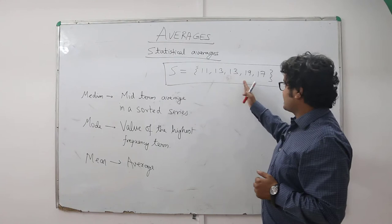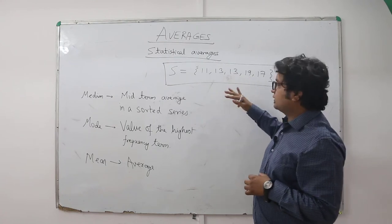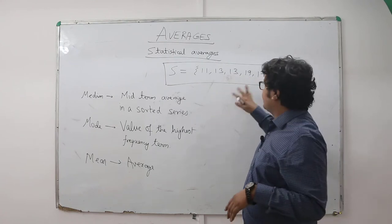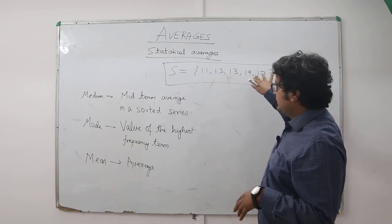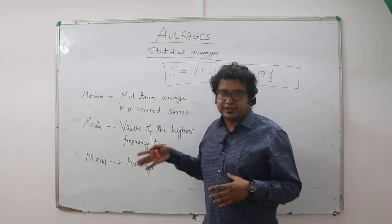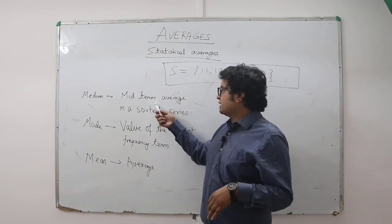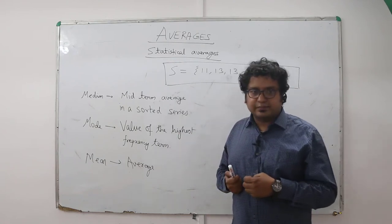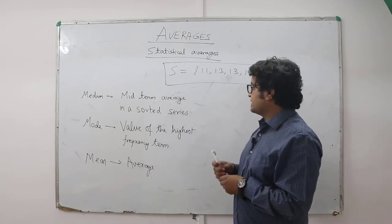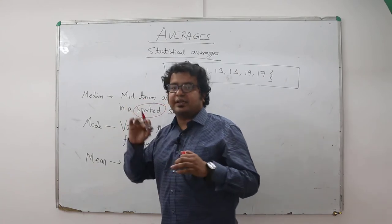I've taken a sample series here—it's not a series, a set of five terms: 11, 13, 13, 19, 17. We'll work through these and try to understand these definitions. Starting with median: median is the midterm average in a sorted series. What is a sorted series? A series which is arranged either in ascending or descending order.